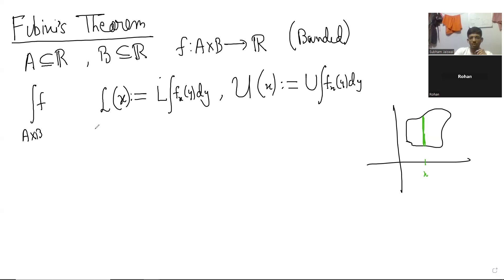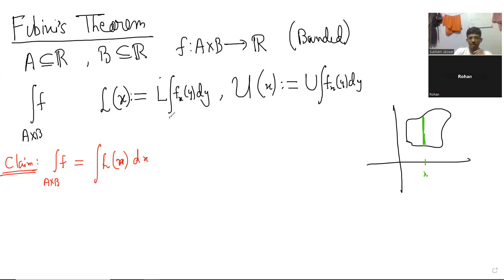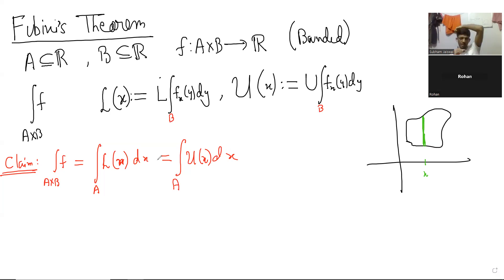The claim is that the double integral over A×B equals the integral over A of L(x) dx, which also equals the integral over A of U(x) dx, and these are all equal.